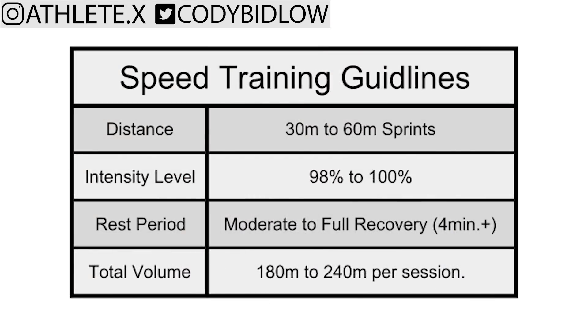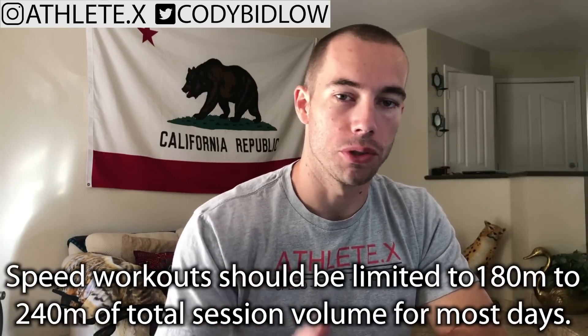You need to use moderate to full recovery between these runs. When you're really focusing on bringing up the actual velocity at which you can sprint, the rest needs to be long enough so you can fully recover between runs — maybe sip on some Gatorade and creatine so that you're refueled and ready to go. Most sessions should run between 180 to 240 meters, with 300 to 360 meters being the ultimate highest volume you should ever use in a speed training workout. Once you're above 300 to 360 meters, that's going to be way too stressful and you won't be able to recover within the next couple of days.